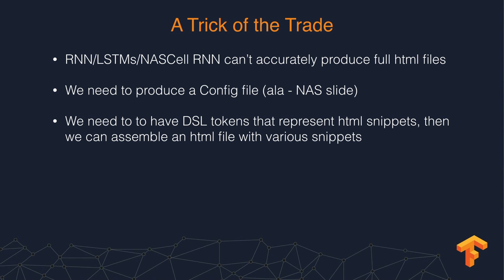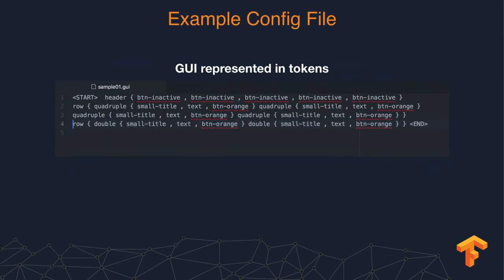The domain-specific language tokens represent and get compiled into raw HTML. Each token is something the network can predict separately. They get tokenized and turned into numbers fed in, and when the predictions come back out as numbers, we convert them back to GUI tokens — with a start token and end token, similar to sequence-to-sequence NLP work.